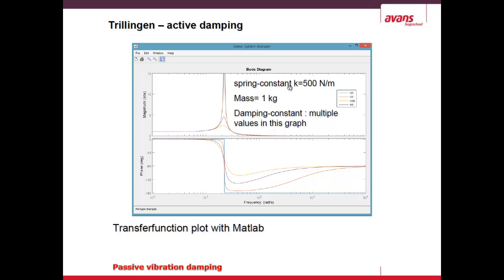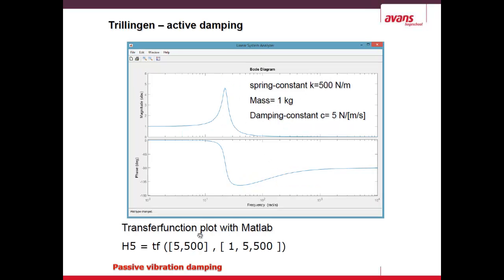I plotted here for a spring constant of 500 Newton per meter and a mass of one kilogram. Here I put the MATLAB command of the transfer function for a damping of 5 Newton per meter per second. This is what I'm going to analyze in SOLIDWORKS Motion, and you can download the files as mentioned.